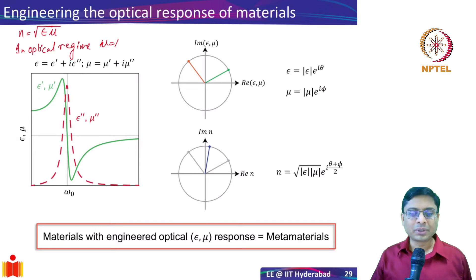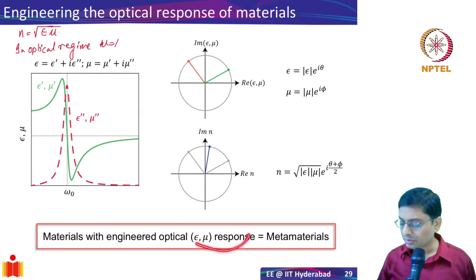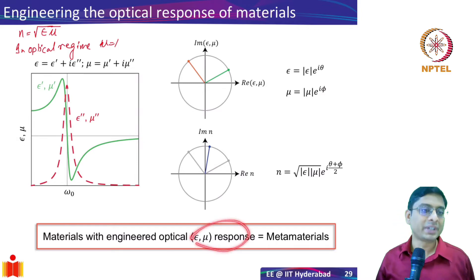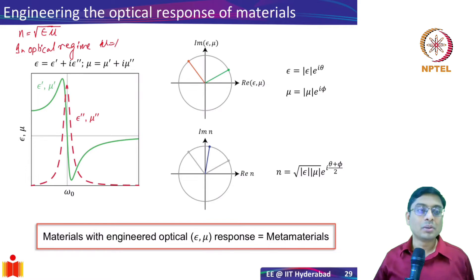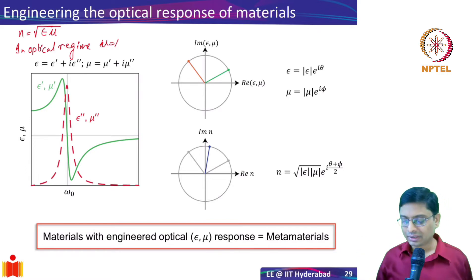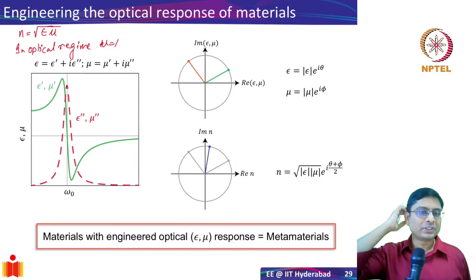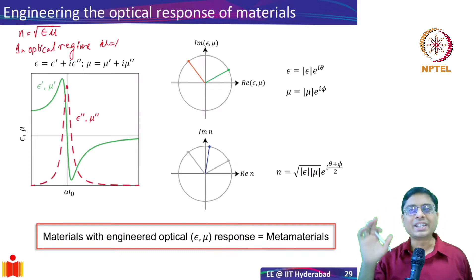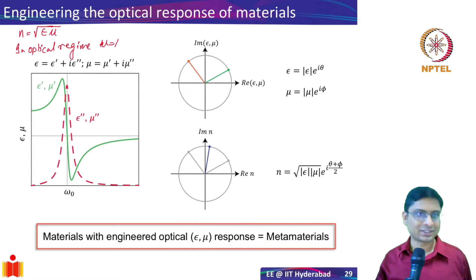When you have materials with engineered epsilon and mu, we call them metamaterials — 'meta' meaning 'beyond,' beyond the existing materials. So what I can do is give you an idea of why this is important. We are going to discuss them at length at a later point, but right now I want to explain why this matters.